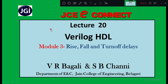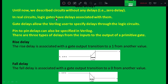Until now, we have considered circuits without any delays. The programs already written in previous classes have not considered any delay. We assumed a delta delay — whenever a boolean expression is executed it takes a very small delay, in terms of nanoseconds or microseconds, which we can ignore. But now we will introduce a delay and see how the output changes according to that delay.